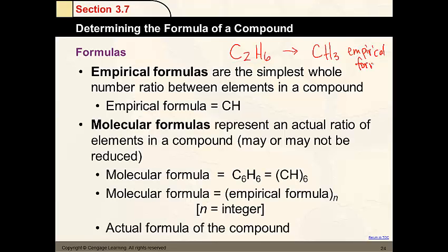Now molecular formulas, as you see below, represent the actual ratio which may or may not be reduced. This is an example of a compound called benzene where it has six carbons and six hydrogens.